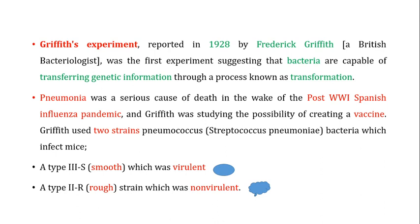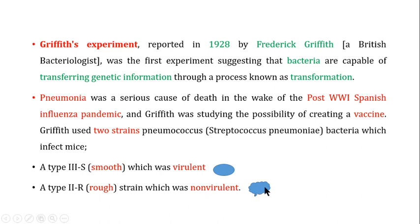Griffith used two strains of the bacteria Pneumococcus — Streptococcus pneumoniae — which infect mice. One strain was known as the smooth strain, which was a virulent strain. By virulent I mean that infection with this strain was going to kill the host. The other strain he used was the rough strain, which was non-virulent.